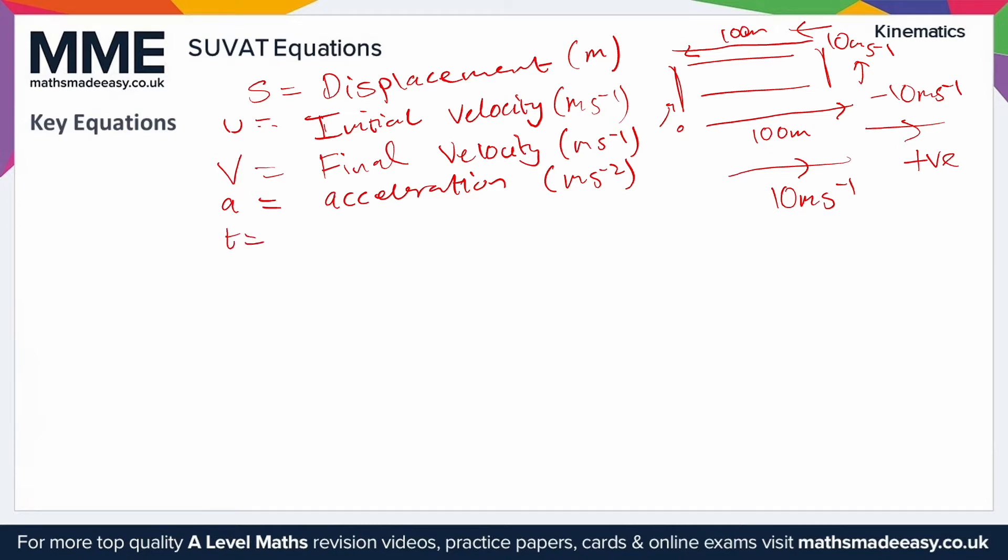Next T, and the one that makes the most sense: time. We're just going to measure that in seconds. There are five equations that you're going to need to know. The first of which is V equals U plus AT. This is a good way of finding the final velocity if you know the initial, the acceleration, and the time taken.